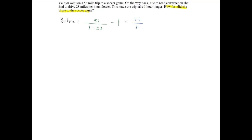In the previous video, we went ahead and set up the equation, and now all we have to do is solve. Our equation is 56 over r minus 28 minus 1 equals 56 divided by r, the rate. And recall that this is the time from the soccer game set equal to the time it took getting to the soccer game.